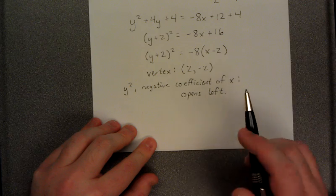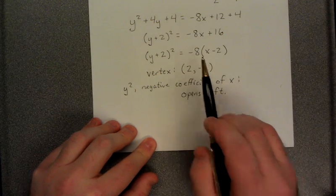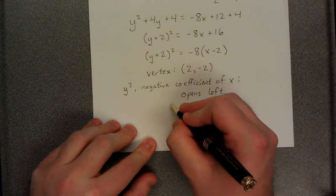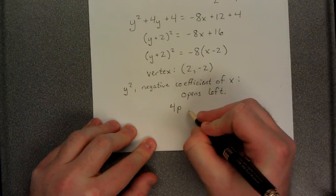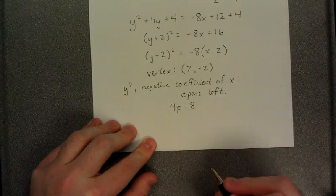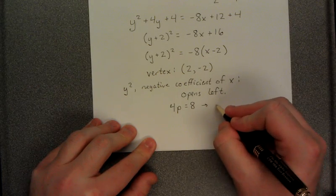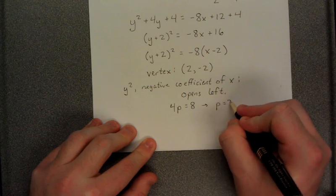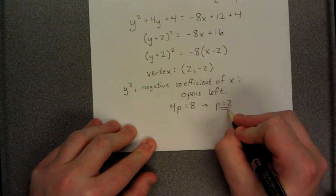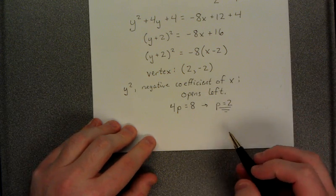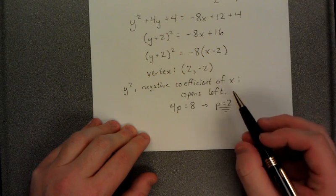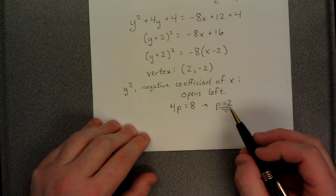We use the negative to figure out that it opens to the left, and now we'll use the fact that we have an 8 there to figure out the appropriate distance. So 4p is supposed to be equal to 8, which takes us to the fact that p is equal to 2. Now once again, this represents the distance from the vertex to both the focus and the directrix.